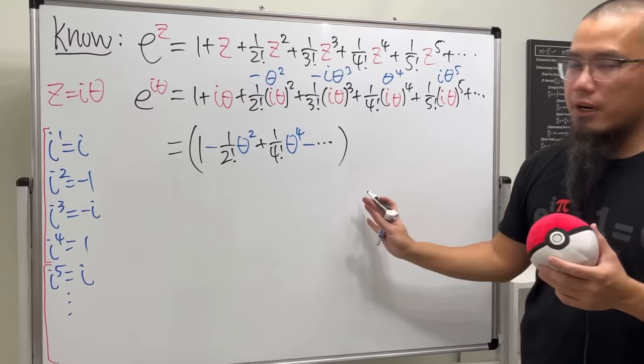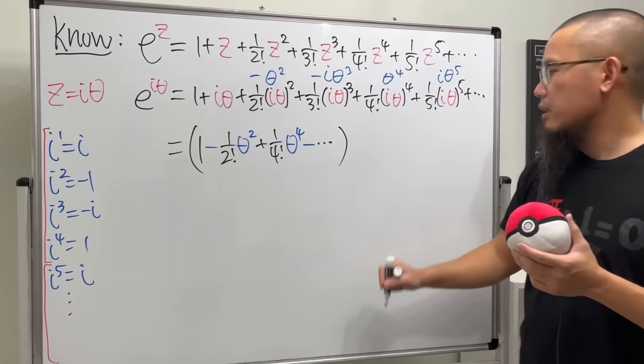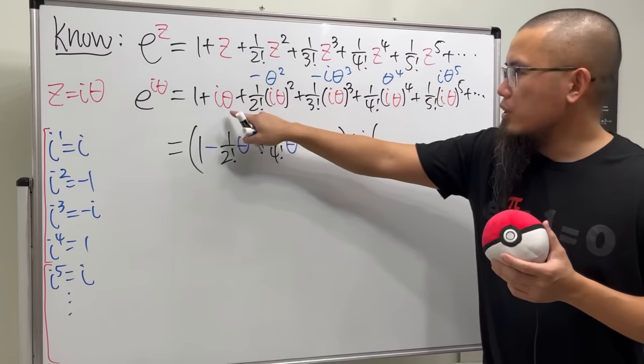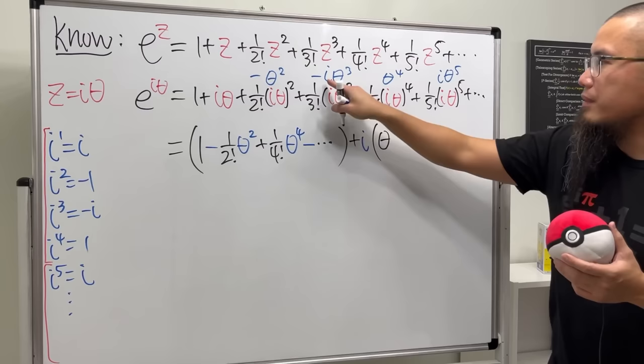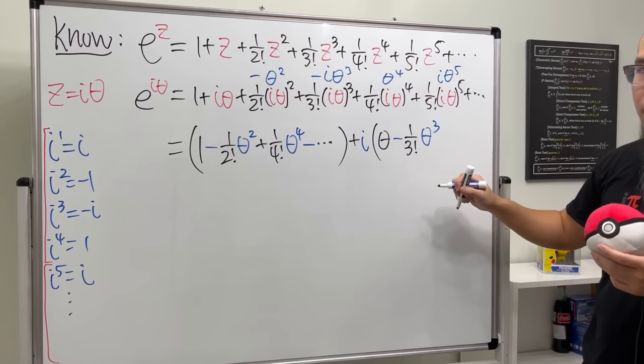Now, let's put down the terms that they all have the i. So starting with this. And I'm actually going to factor out that i first. So let me just put down plus. And here we have the i. So this is just going to be theta. And then next, we have this, which is going to be a negative. And then we have the i, which is factored out already. So we just have 1 over 3 factorial. And then theta to the third power.